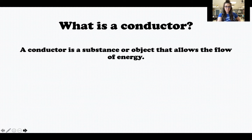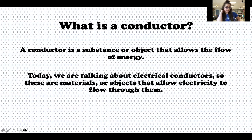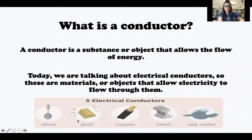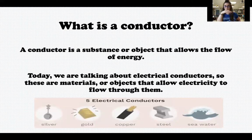A conductor is a substance or object that allows the flow of energy. Today we are talking about electrical conductors — materials or objects that allow electricity to flow through them. Here are some examples: silver, gold, copper, steel, and seawater. Actually, any type of water is an electrical conductor. That's why you always hear 'electricity and water don't mix,' because electricity can travel through water and be very dangerous.